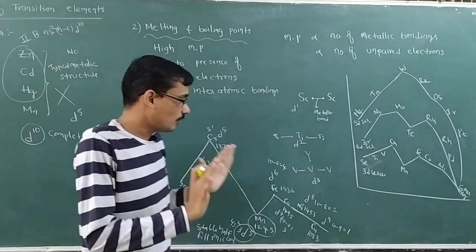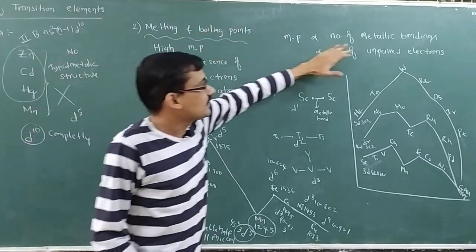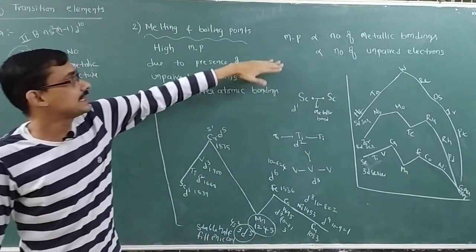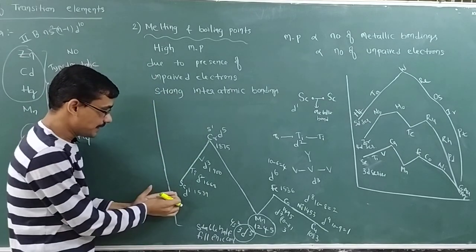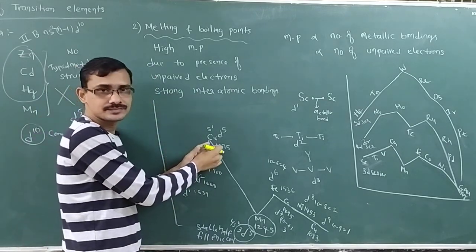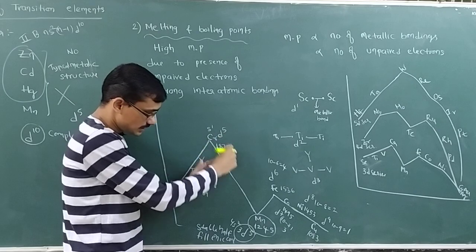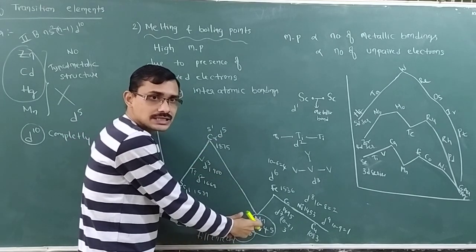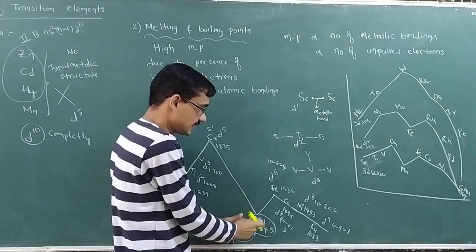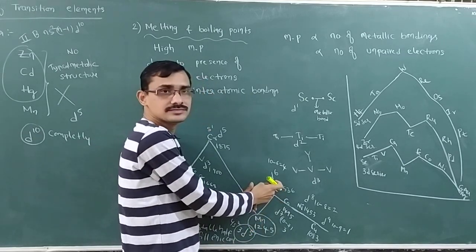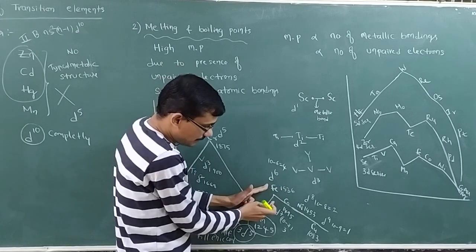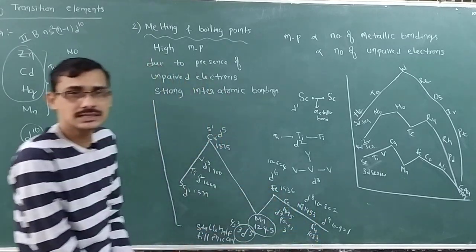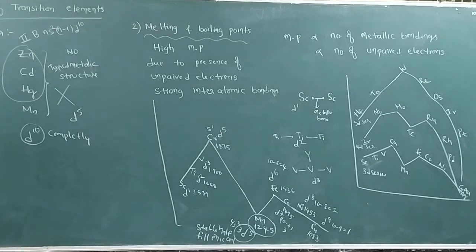In summary: as the number of unpaired electrons increases, metallic bonds increase, and melting points increase. When a half-filled configuration is reached, it is stable and unable to participate in metallic bonding — resulting in weak metallic bonds and a lower melting point. Then, as unpaired electrons increase again, melting point rises, and as they decrease from 4 to 1, melting point falls again. This is how we explain melting points of transition elements.